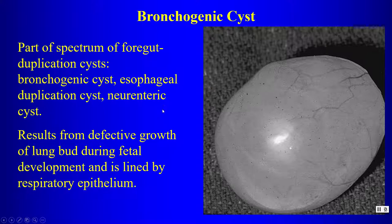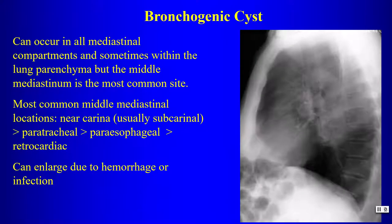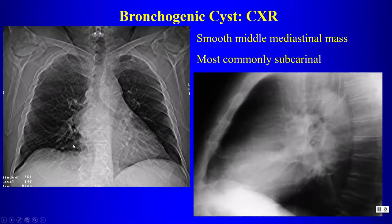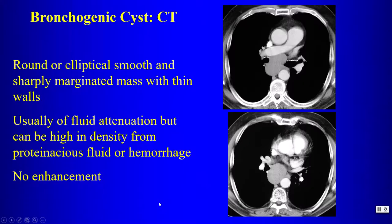Bronchogenic cysts are part of the foregut duplication cyst spectrum, which includes esophageal duplication cysts and neuroenteric cysts. These can occur in all mediastinal compartments but are most common in the middle mediastinum, especially the subcarinal region. They can enlarge due to hemorrhage or infection. Even when high in attenuation on CT, there is no enhancement — that is the key distinguishing feature.